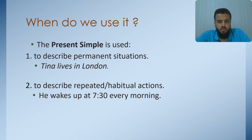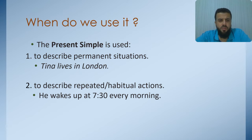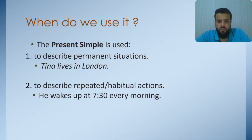The present simple is used to describe a permanent situation — something that will continue on forever. For example, Tina lives in London. Maybe you can say Tina can move to another city or country. Yes, but we don't know if this is going to happen in the future or not. Currently, Tina lives in London and she doesn't have any intention or plan to move to another city or country.